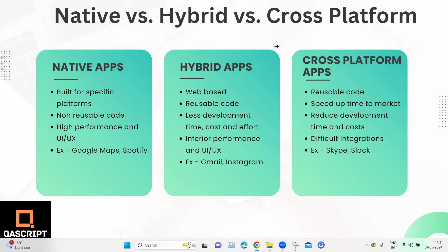Coming to hybrid apps, hybrid platform development uses web-based technologies to build mobile apps. They can basically share the backend code rendered natively across different platforms, so it is built on reusable code. This reduces the development time, costs, and efforts. But on the downside, it has inferior performance and UX designs compared to a native app. Some examples of hybrid apps are Gmail and Instagram.